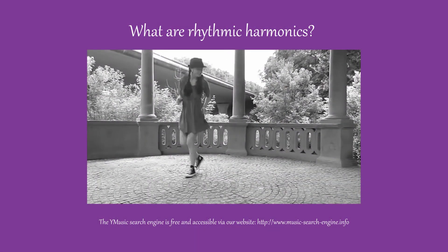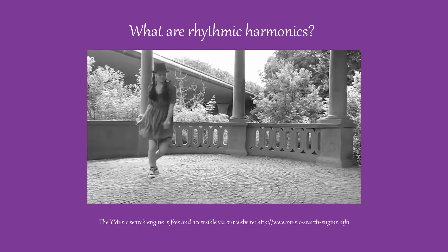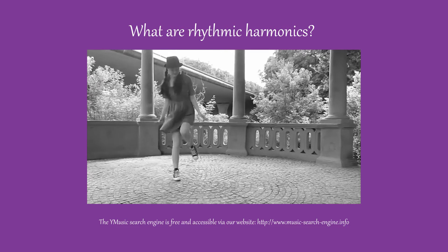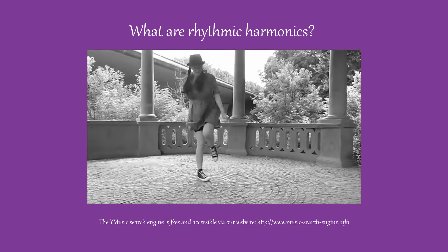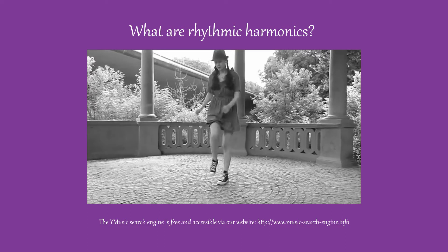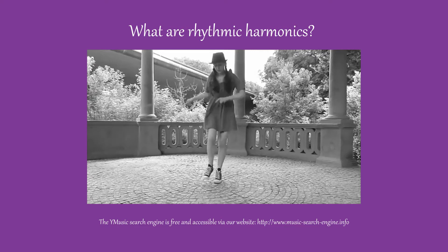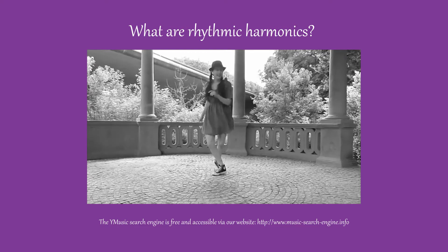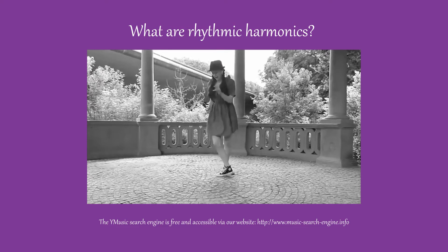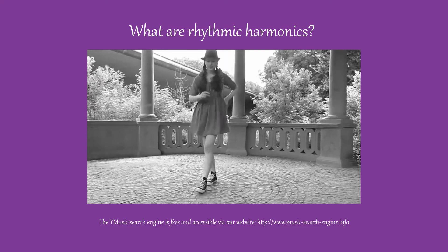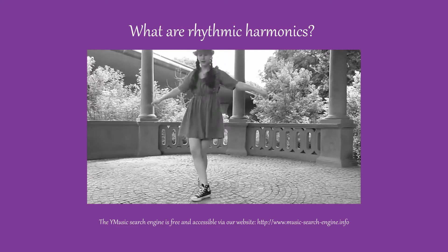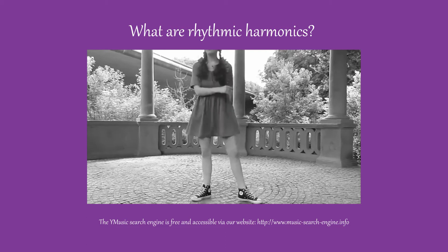In music, rhythm is one of the elements which, generally, are the most easily perceived by the listener, and it allows him to approach the musical structure of a piece of music. We can say that rhythm is to music what color is to painting. Tempo is one constituent of a rhythmic structure, but it is not the only one.